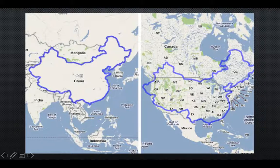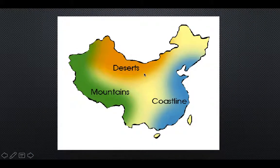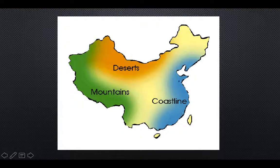So China is a massive country with harsh deserts in the north. It has the Pacific Ocean to the east and mountain ranges to the west. That resulted in a central area where a lot of the farmland was, and it isolated China. China is so big — kind of like the United States — that different areas will have dramatically different weather at the same time.